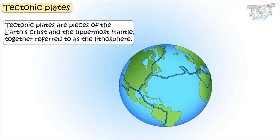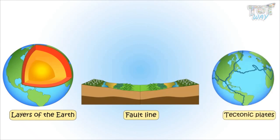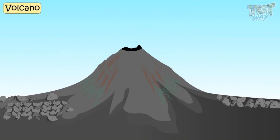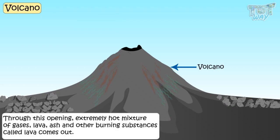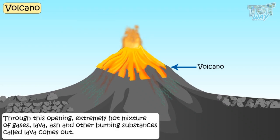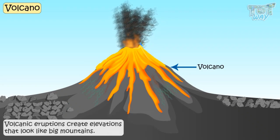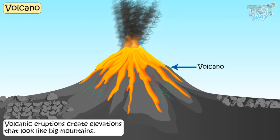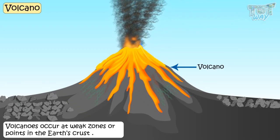Now we know what the layers of the earth, fault lines, and tectonic plates are, so we are ready to learn what a volcano is. A volcano is an opening or vent in the earth's topmost layer called the crust. Through this opening, an extremely hot mixture of gases, lava, ash, and other burning substances comes out. Volcanic eruptions create elevations that look like big mountains, and volcanoes occur at weak zones or points in the earth's crust.